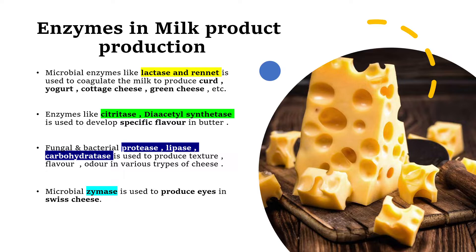Fungal and bacterial enzymes like protease, lipase, and carbohydrase are used to produce texture, flavor, and odor in various types of cheese. Cheese has a specific shape, size, texture, flavor, and mouthfeel when eaten, all because of a wide range of enzymes acting on proteins, lipids, and carbohydrates.